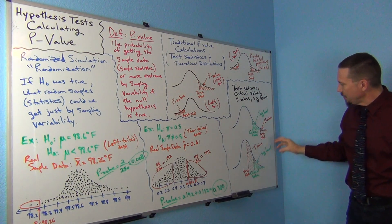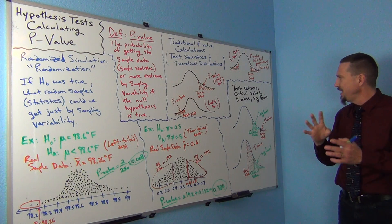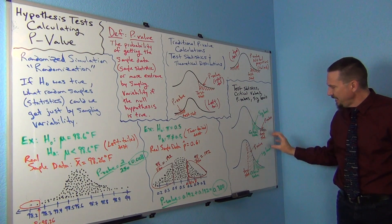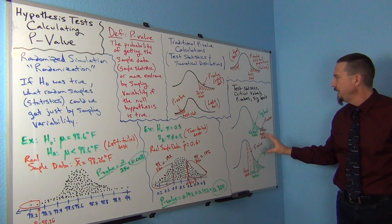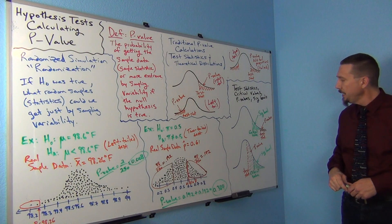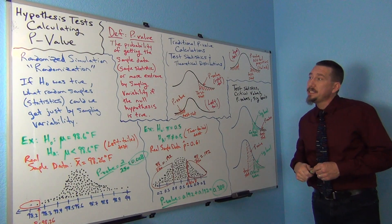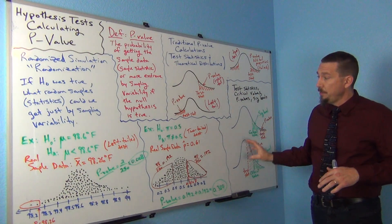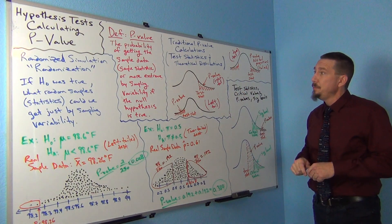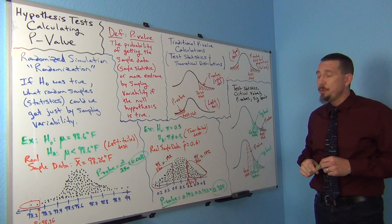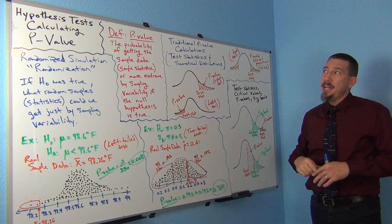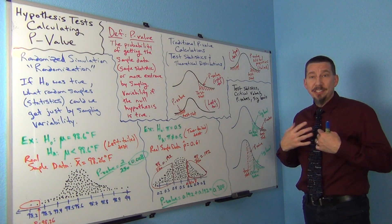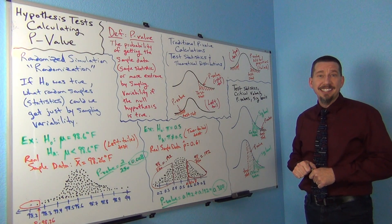These two graphs show how those four things we've been talking about fit together. A lot of students, especially when they first start, have a hard time getting these two pictures in their head, but this is a good way to think about it. In our next video, we'll look at using computer software to calculate p-values so you can get an idea of using real software to do this. This has been hypothesis testing: calculating p-values. This is Matt Tuchel, Intro Stats — I'll see you next time.